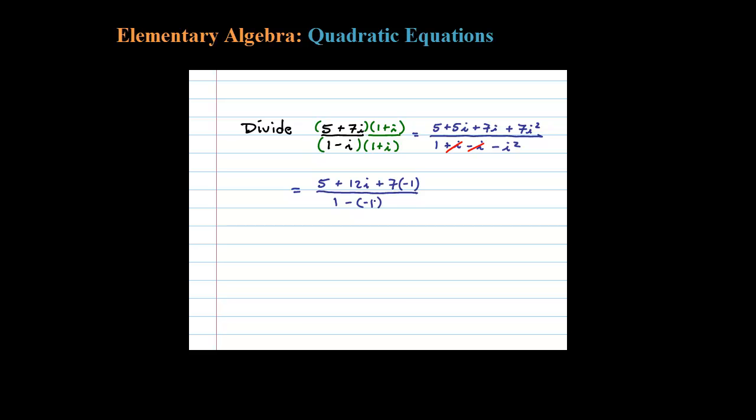Look at this, no more imaginary unit in the denominator—that's sort of the goal. So 5 plus 12i minus 7 divided by 1 plus 1. Finishing this off, 5 minus 7 is negative 2 plus 12i all over 2.